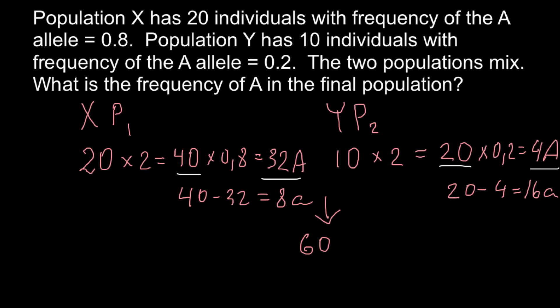And out of this 60 alleles, 32 alleles would be capital A and 4 alleles capital A from the community 2. So together, we are going to get 36 capital A alleles. And the rest going to be small a alleles. So 8 plus 16 going to be 24, plus 24 small a alleles.